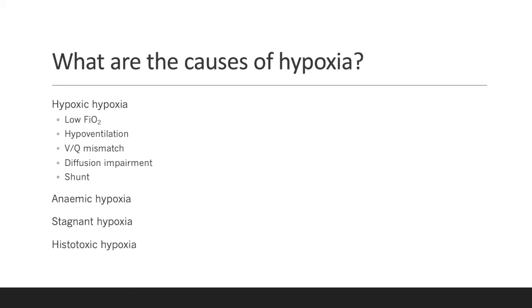Three: stagnant hypoxia. This is where the PaO2 is normal and the oxygen content in the blood is normal. However, oxygen cannot be delivered to the tissues. An example of this would be cardiogenic shock.